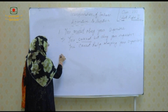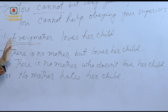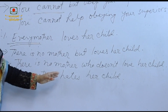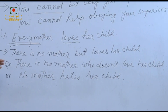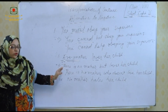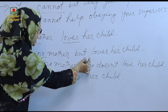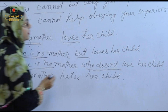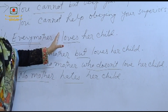The third rule: if there is 'every' in an affirmative sentence, then we use 'there is no...but', 'there is no...who does not', or 'no + the opposite form of the positive word' in the negative sentence. For example: 'Every mother loves her child' becomes 'There is no mother but loves her child', or 'There is no mother who does not love her child', or 'No mother hates her child'.